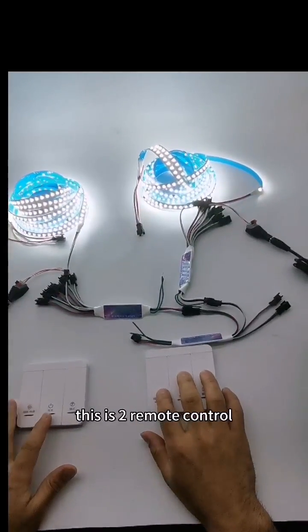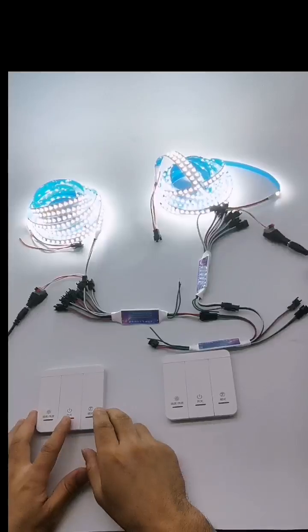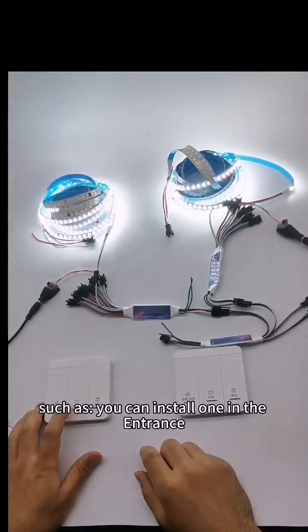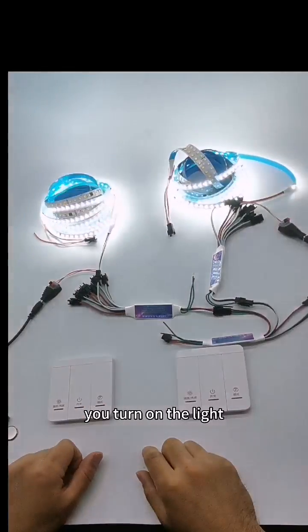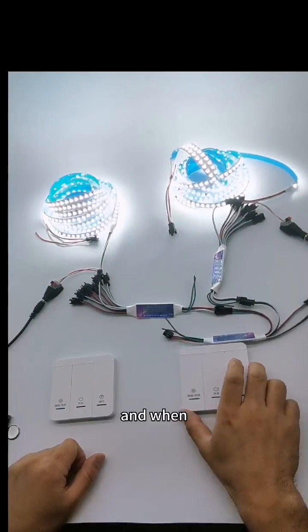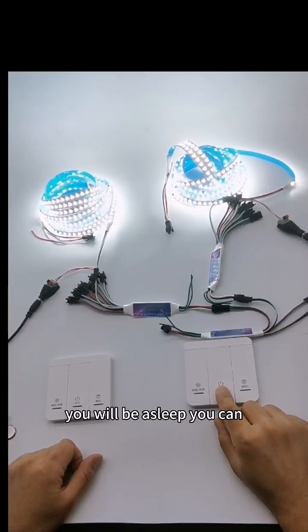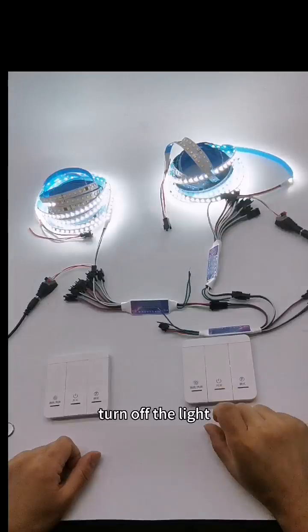This system has two remote controls. For example, you can install one at the entrance. You turn on the light when you enter, and when you go to sleep, you can turn off the light.